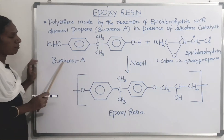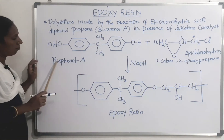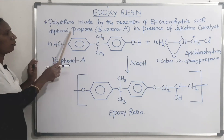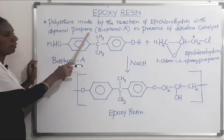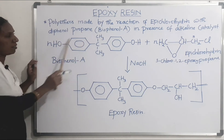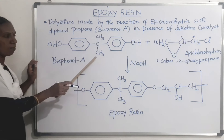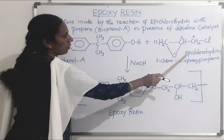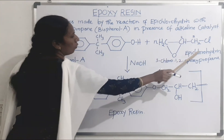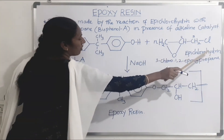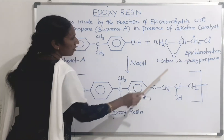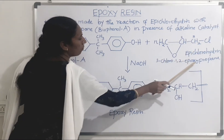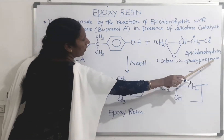The first monomer is bisphenol A, otherwise called diphenolpropane. The other monomer is epichlorohydrin, otherwise called 3-chloro-1,2-epoxypropane.